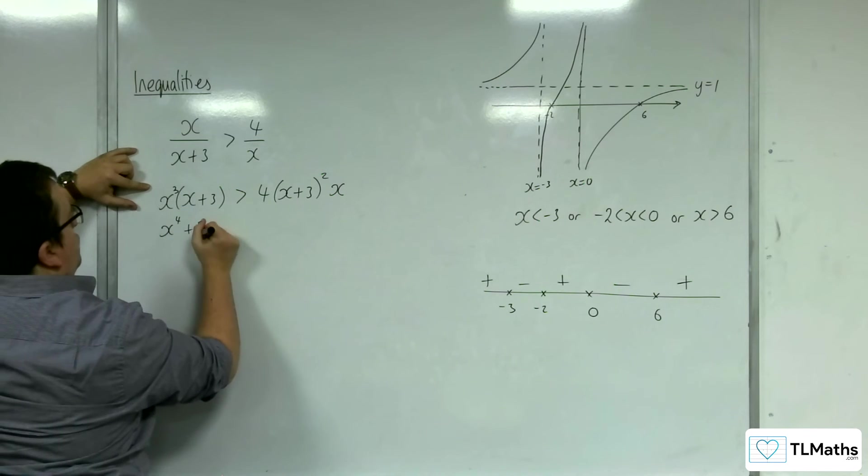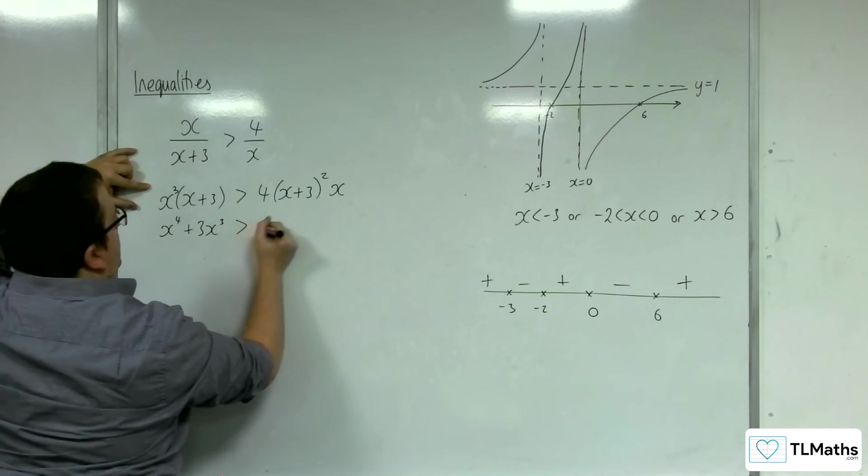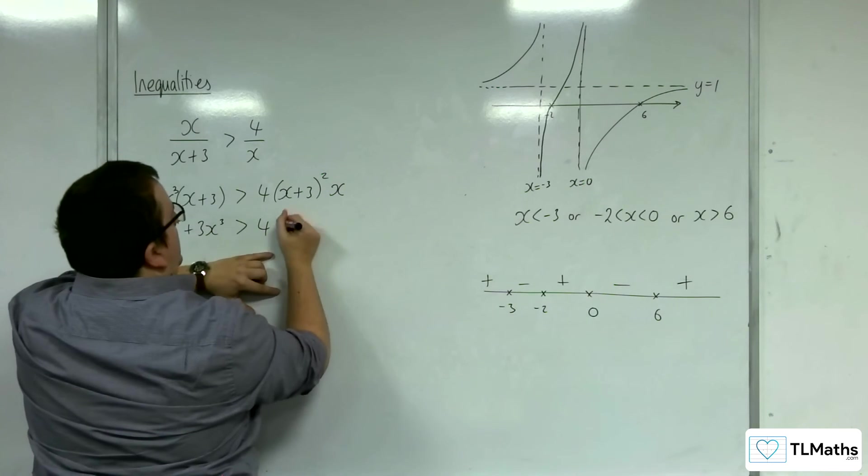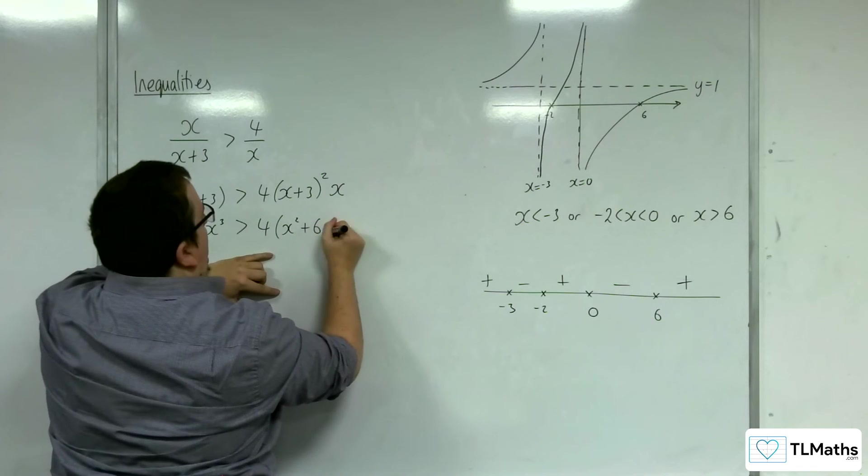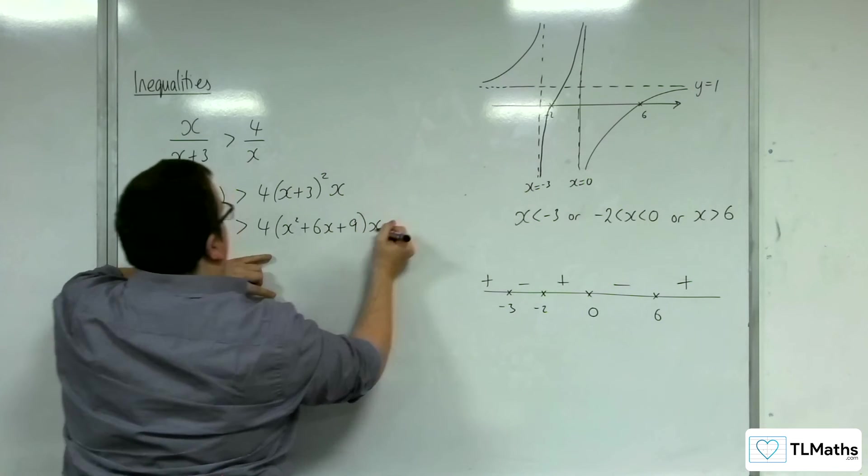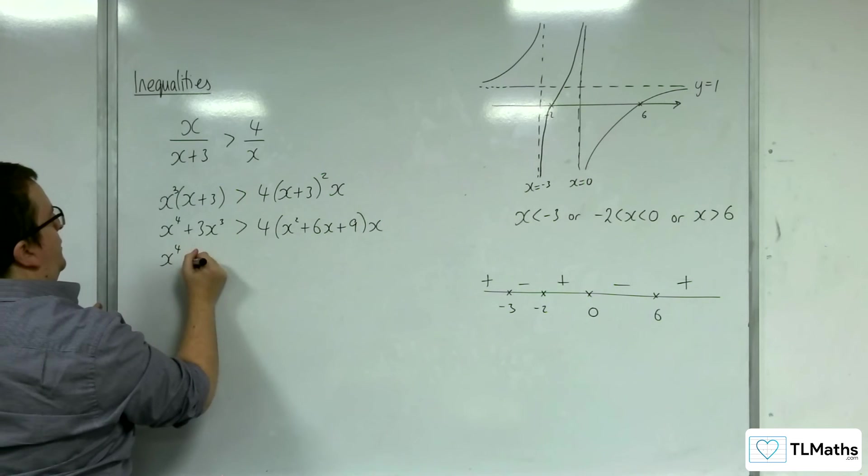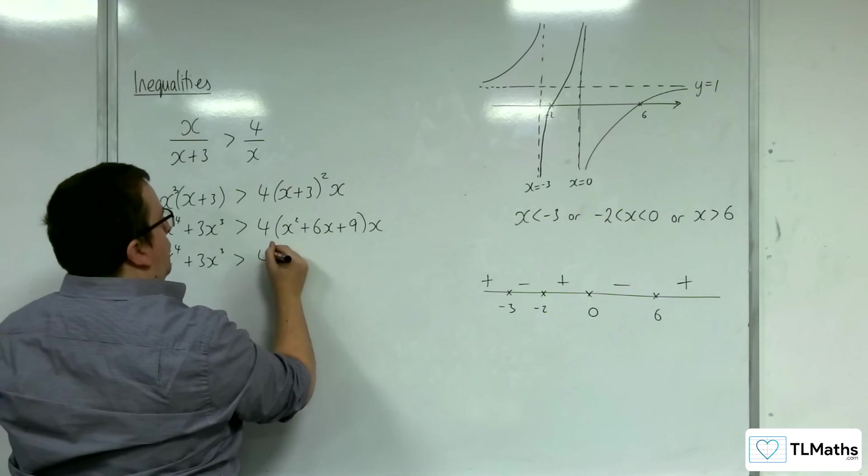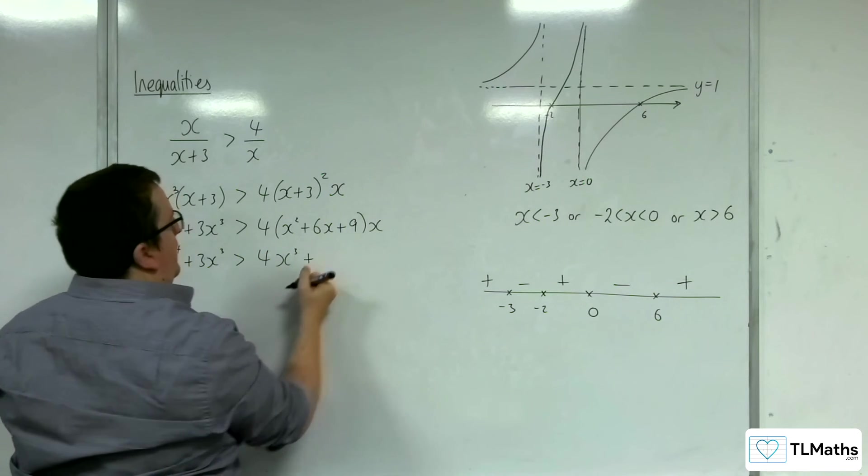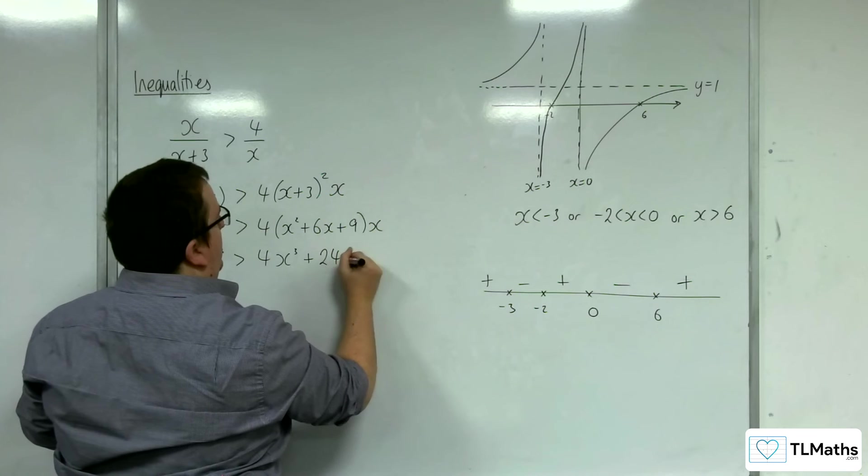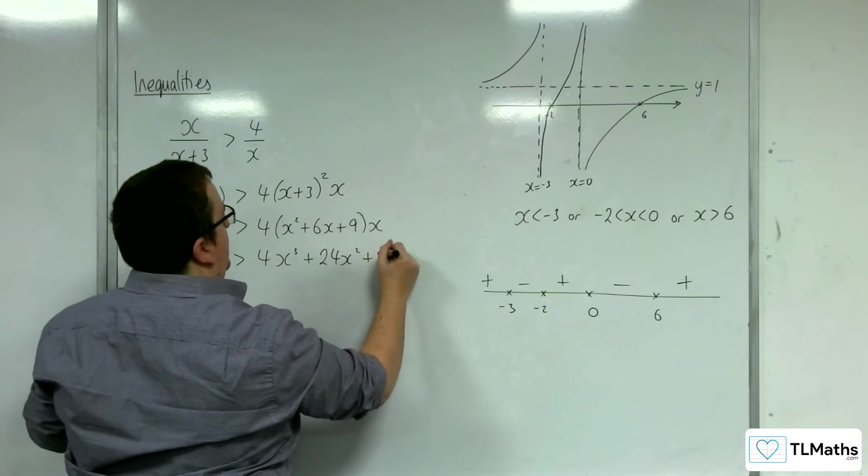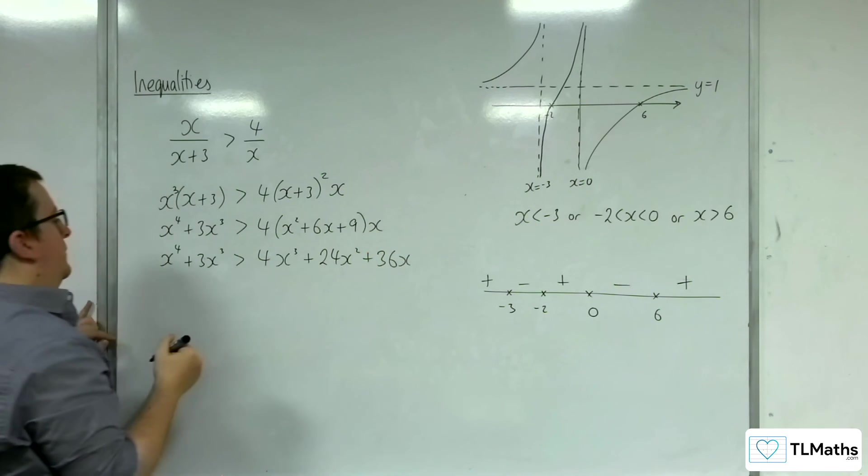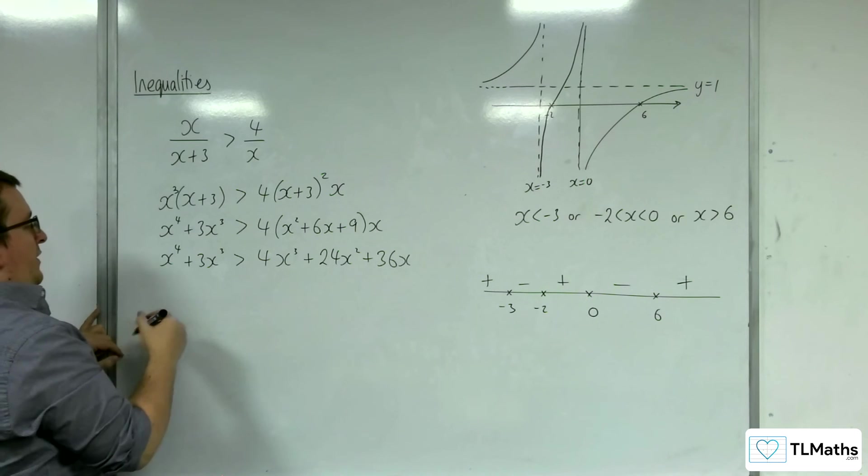So I need to expand this out. So I've got x to the 4 plus 3x cubed is greater than 4 lots of, so I've got x squared plus 6x plus 9 times x. So x to the 4 plus 3x cubed is greater than 4x cubed plus 24x squared plus 36x.